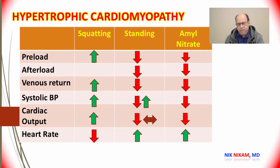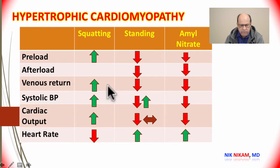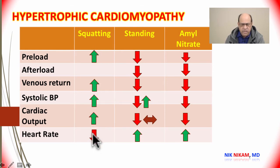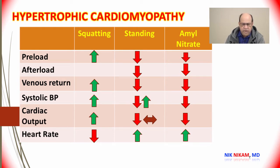These outflow tract murmurs and gradients are altered by various body positions and following administration of amyl nitrate. When a person squats, there is increased venous return leading to increased preload, increased systolic blood pressure, increased cardiac output, and decreased heart rate. All of these increase end-diastolic volume, which leads to softening of the murmur in a patient with hypertrophic cardiomyopathy.